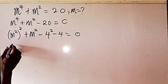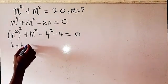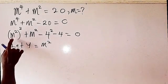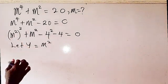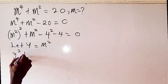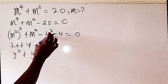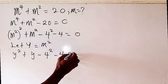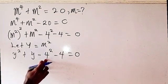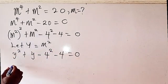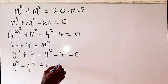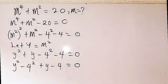From here, let's let y equal m squared. That is, anywhere we see m squared we replace by y. So we are going to have y squared plus y minus 20 equals 0. Now we try to connect the terms that have power 2: we have y squared minus 4 squared, then plus y minus 4, equals 0.